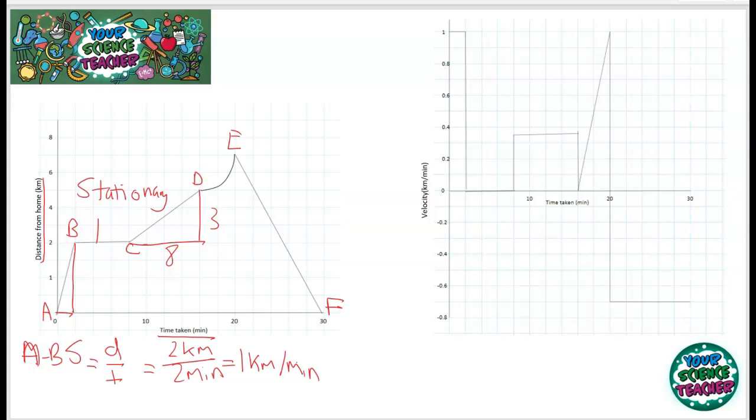This bit here between D and E is really interesting because you can see that there's not a constant gradient. Between D and E, this means the car or bus is accelerating, and you can see that the acceleration is quite constant because it's quite a smooth curve upwards.